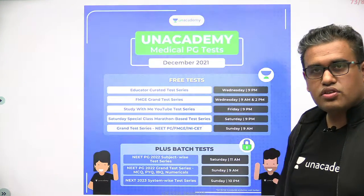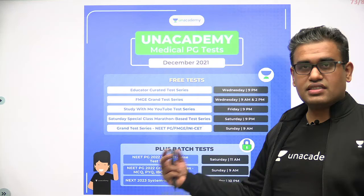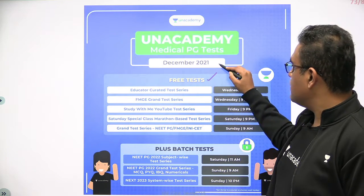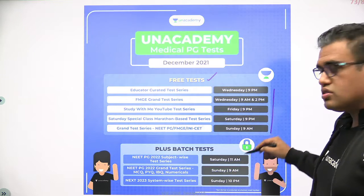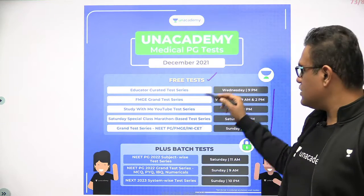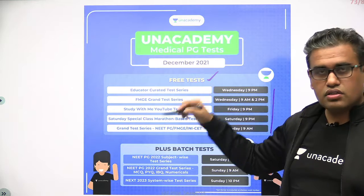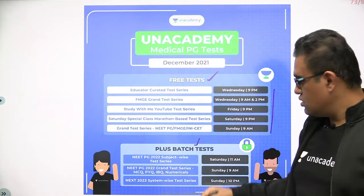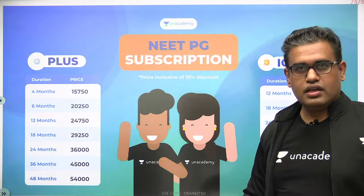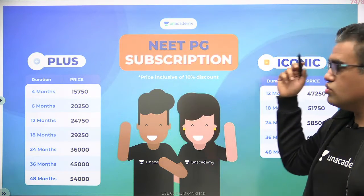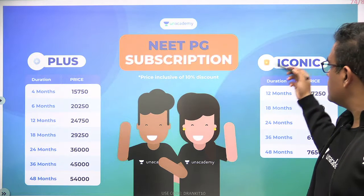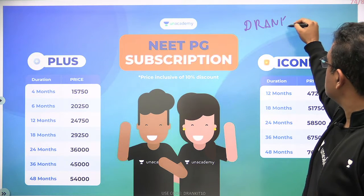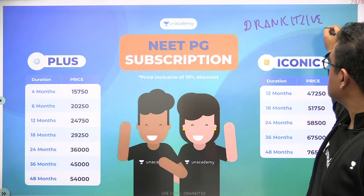A few benefits of the plus subscription — you can see these are the tests taken on a weekly basis in the academy. These are for the month of December. Every week from Wednesdays to Sundays we have free tests open for all, plus in addition, for the plus subscribers we have other tests like subject-wise and grand tests on Saturdays and Sundays. If you want to subscribe, there are two channels — plus and iconic. The time zones are given; you can choose any one of them, and if you want a discount, you can use the code 'Dr. Ankit Live'.